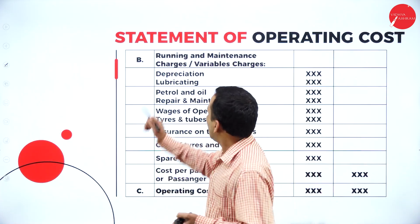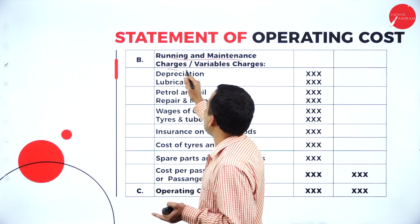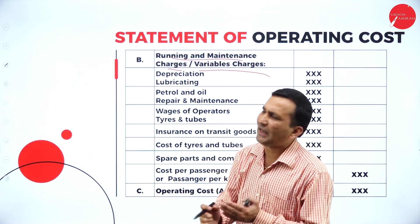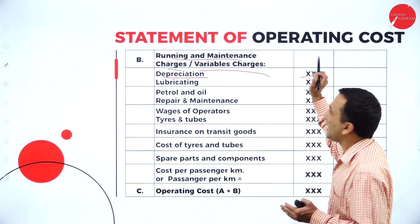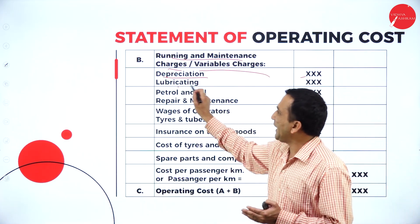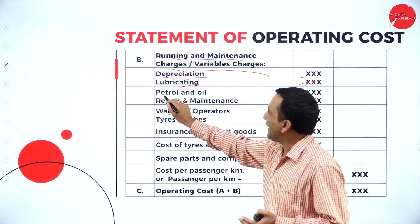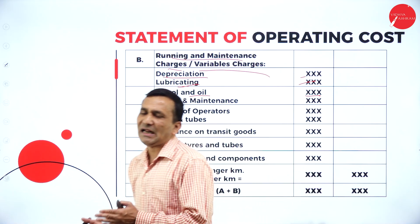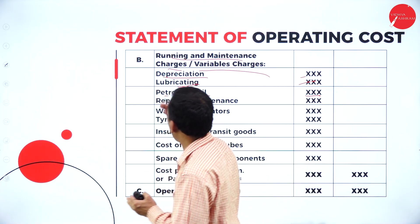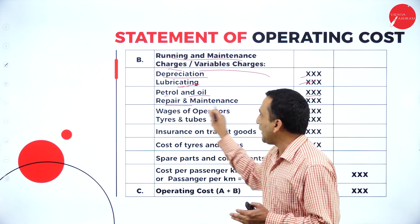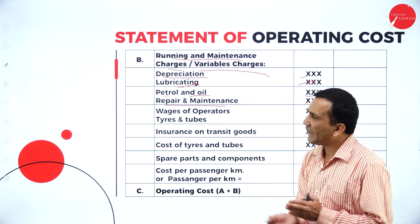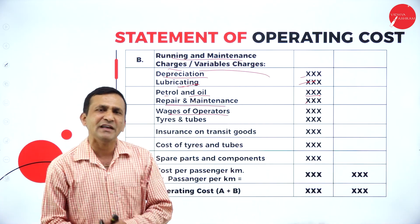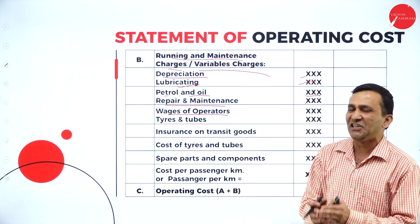Moving to the second category: running or maintenance charges, also called variable charges or variable expense, which keep on varying. The first item is depreciation. We need to take the depreciation amount. Lubricant is also varied. Petrol and oil, diesel, which is also varied because of kilometers — if the vehicle is not running, how would they be filling the petrol and diesel? So it is not possible. Repairs and maintenance also come under running or variable charges. Wages for the operator: if you don't have a permanent operator or technician, you get support from outside, so those wages are also varied.